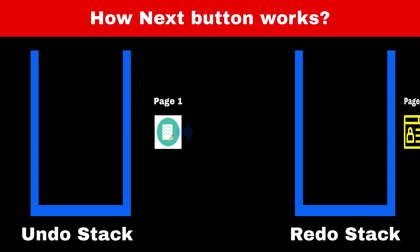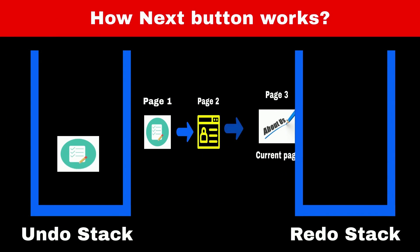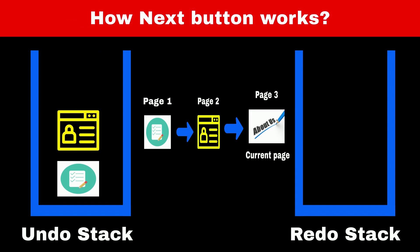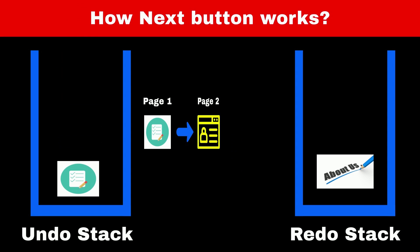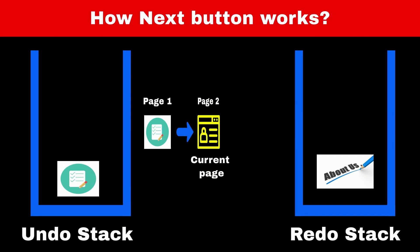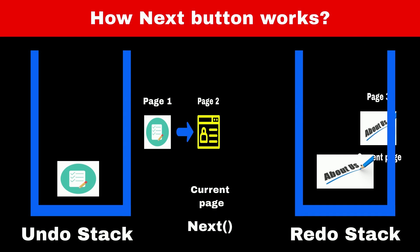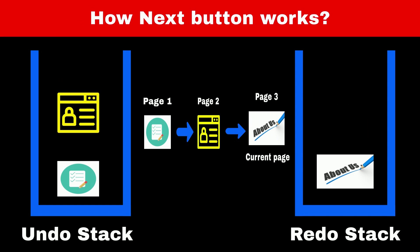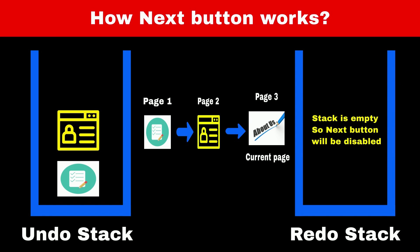To implement the next button in a web browser, we will use another stack called the redo stack. When we navigate from page 1 to page 2 and then page 3, our undo stack holds those pages. When we press back, we push page 3 to the redo stack; pressing back again pushes page 2. Now pressing the next button on page 1 displays and removes page 2 from the top of the redo stack. Similarly, pressing next on page 2 removes page 3. When the redo stack is empty, the next button is disabled.